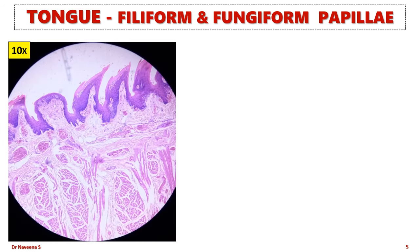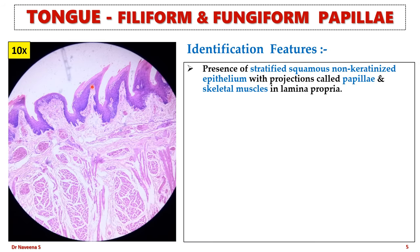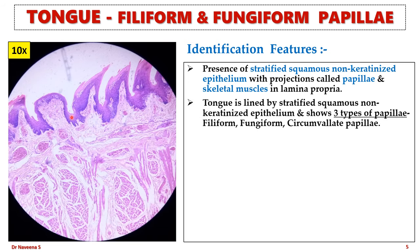Tongue with filiform and fungiform papillae. Here is the slide seen under low magnification. It is identified by the presence of stratified squamous non-keratinized epithelium with surface projections called papillae, and skeletal muscles in the lamina propria. Tongue is lined by stratified squamous non-keratinized epithelium and shows three types of papillae: filiform, fungiform, and circumvallate papillae.